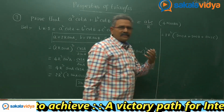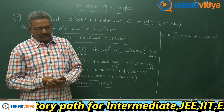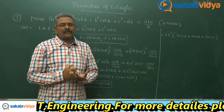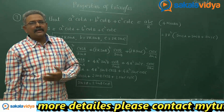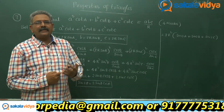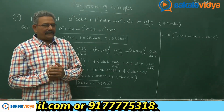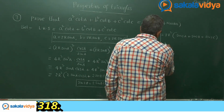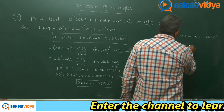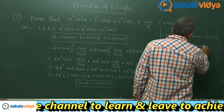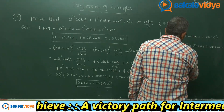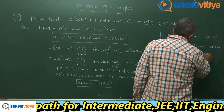Now we recall a very important result studied under the transformation chapter: if A + B + C = 180°, then sin 2A + sin 2B + sin 2C = 4 sin A sin B sin C. Since we are dealing with a triangle, A + B + C = 180°, so this identity applies.